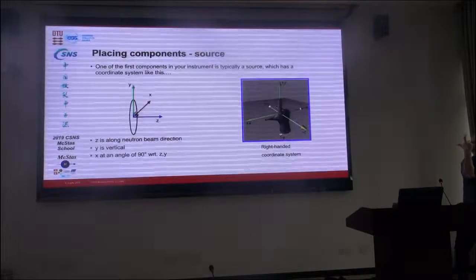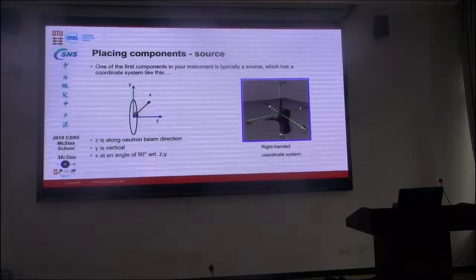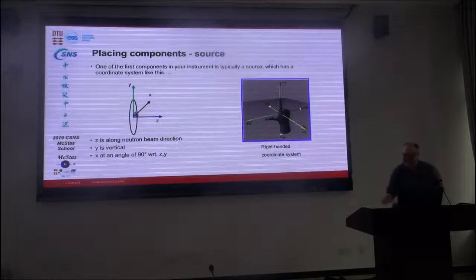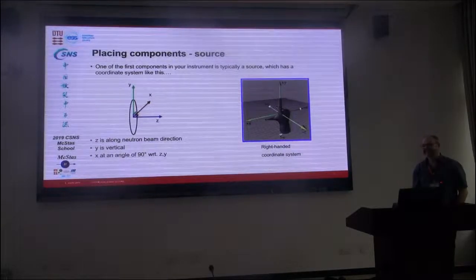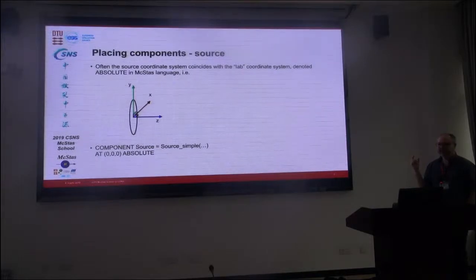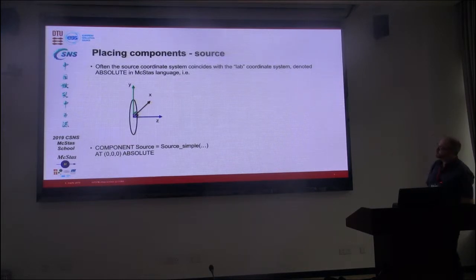When you're constructing these instruments you will find yourself oriented like this, especially if you are on a reactor source that has moving motors and things like that on the instruments. That's quite normal — it means nothing. You're just thinking about how to move things in the right direction. What we typically do is place the source, oftentimes directly at the origin, though it could also be displaced from the origin, with a fixed position to the origin typically.